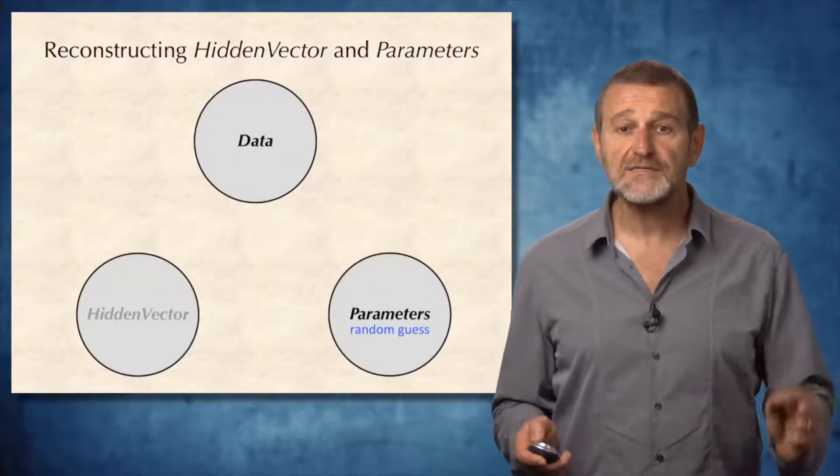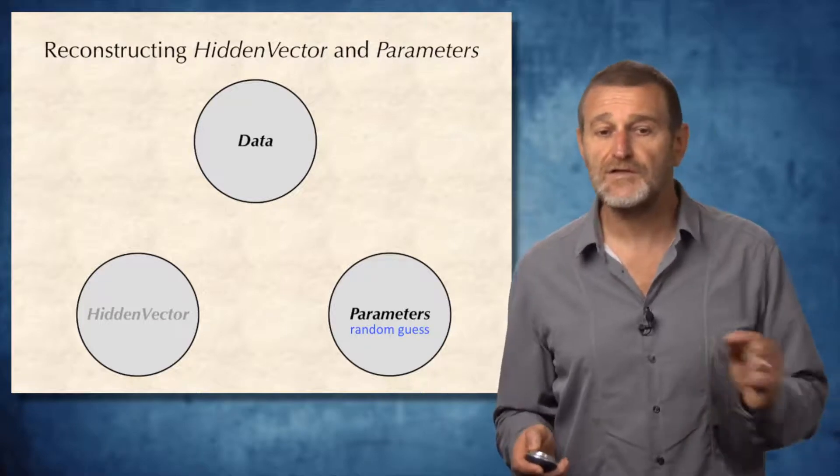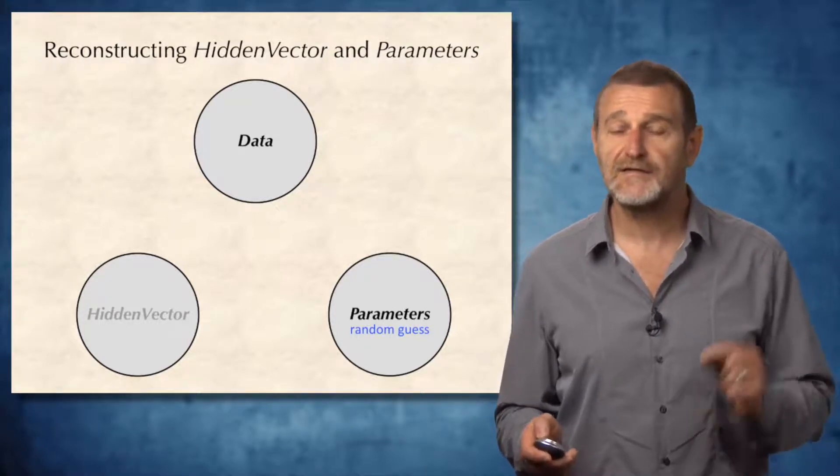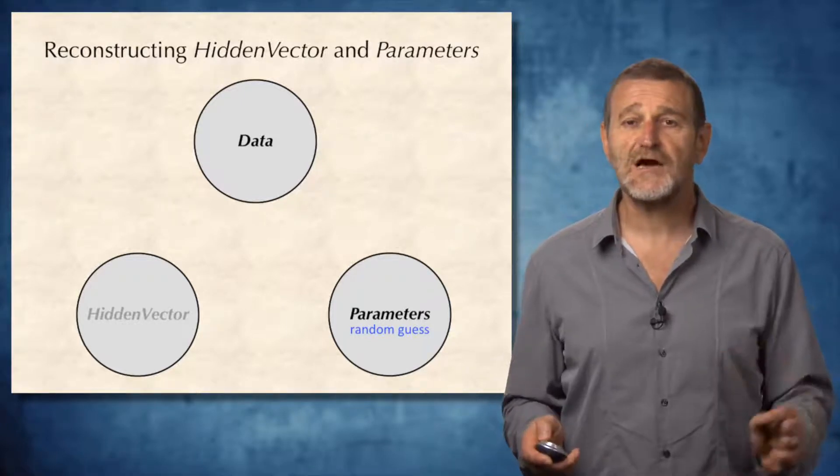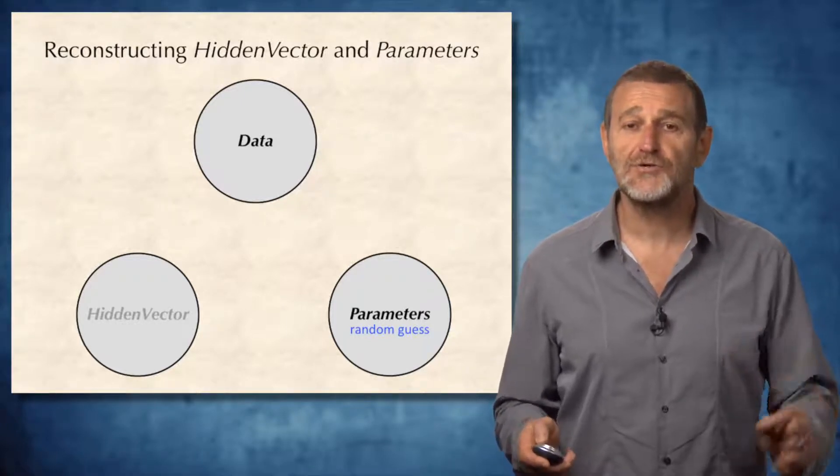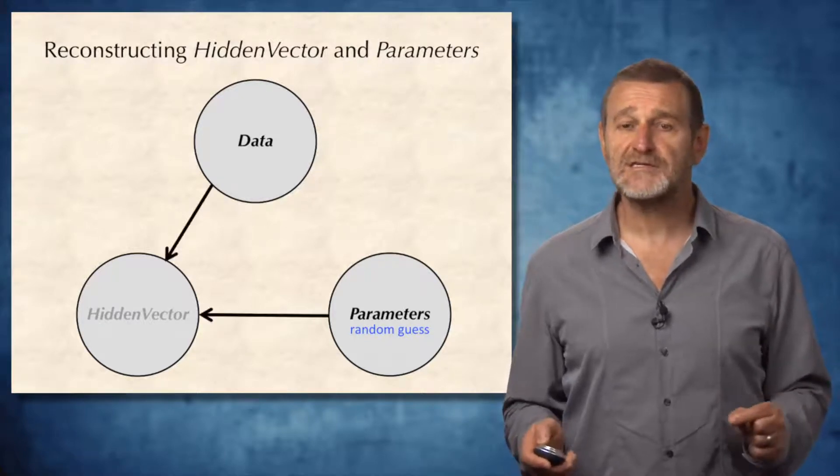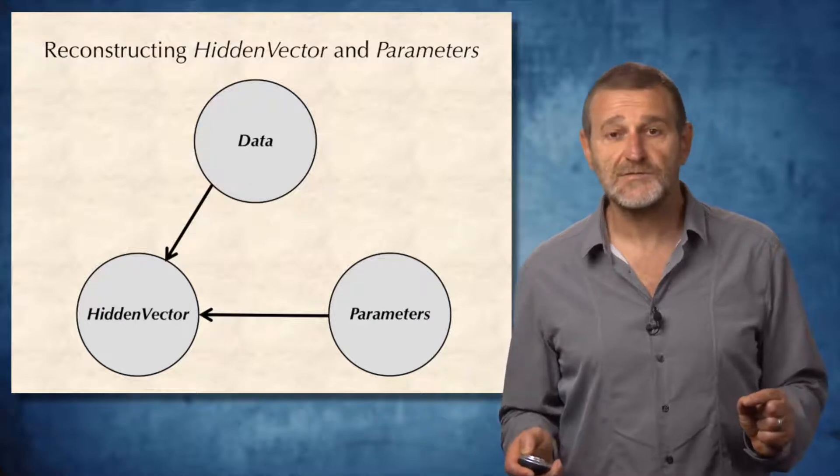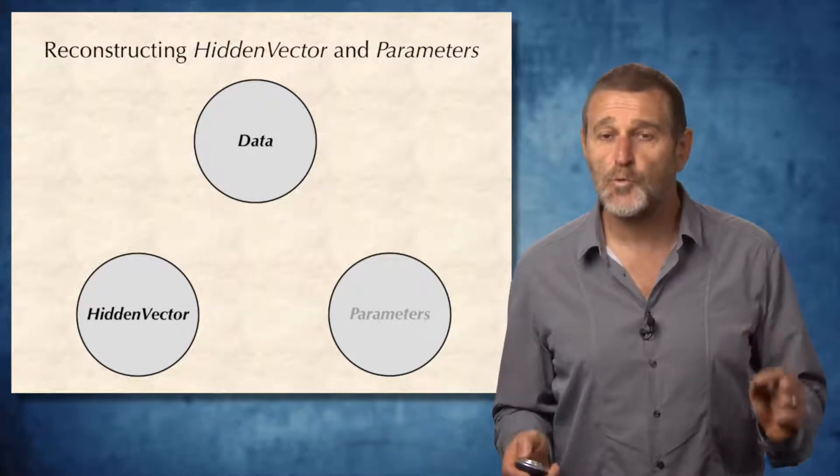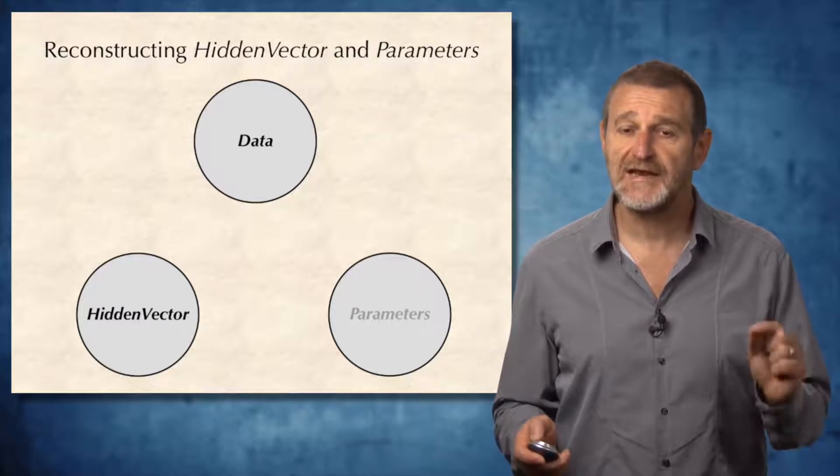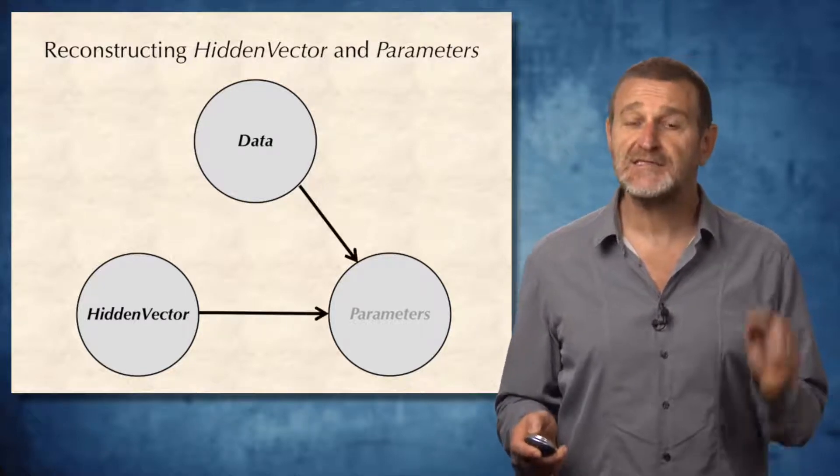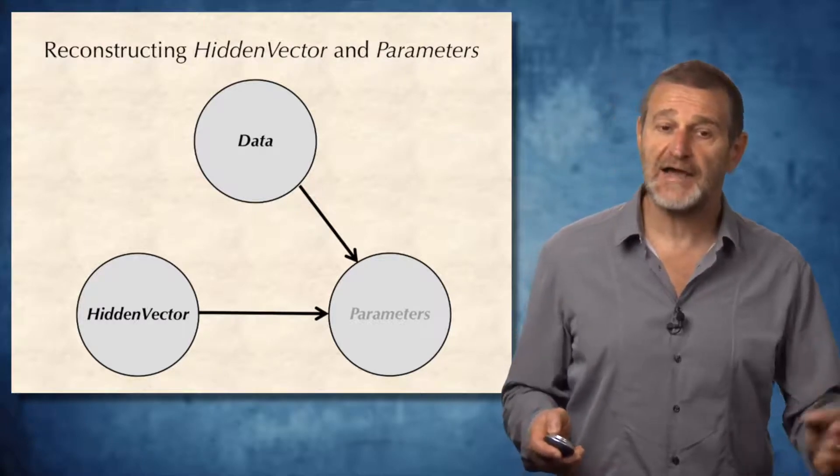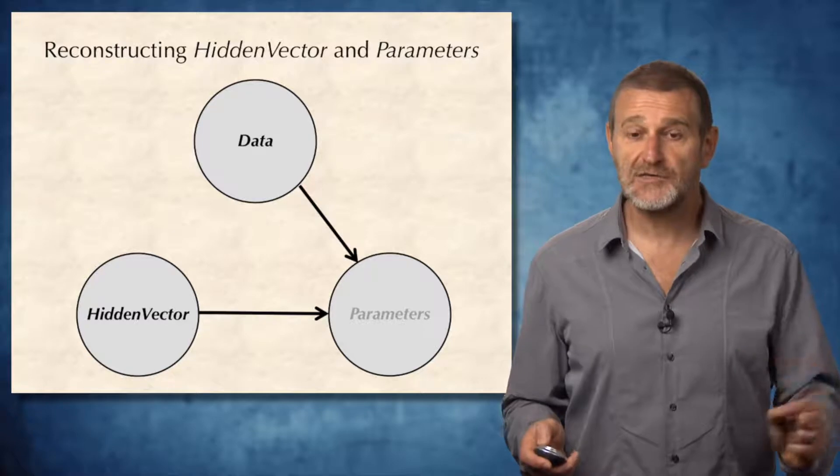This brings us to the following idea. Yes, we do not know parameters or hidden vector when we start evaluating the biases of coins. But let's start from randomly chosen parameters. As soon as parameters are chosen, we can derive the hidden vector. As soon as the hidden vector is derived, we question our wisdom in selecting the initial parameters and estimate the parameters using data and hidden vector as I described before through the dot product.